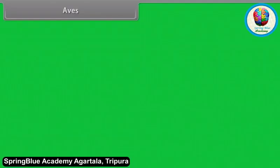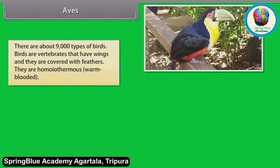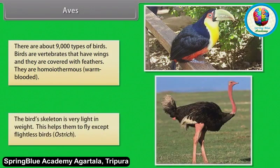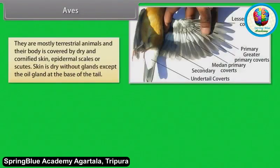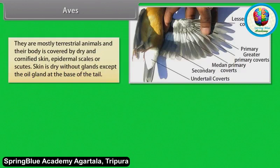Aves — There are about 9,000 types of birds. Birds are vertebrates that have wings and are covered with feathers. They are homeothermous or warm-blooded. The bird's skeleton is very light in weight, which helps them to fly — except flightless birds, example Ostrich. Skin is dry without glands except the oil gland at the base of the tail.